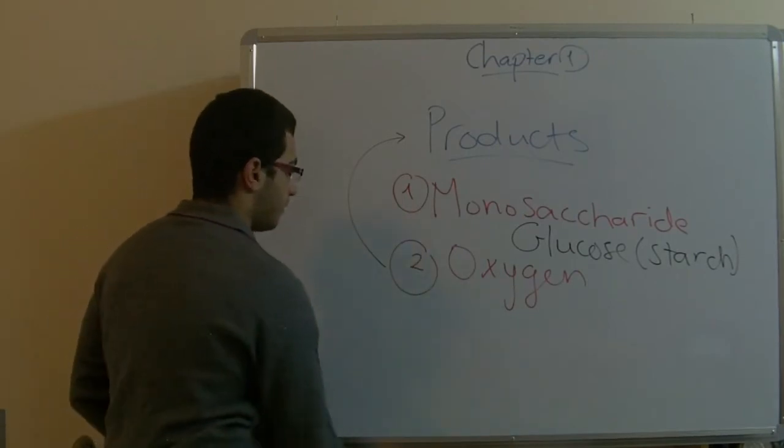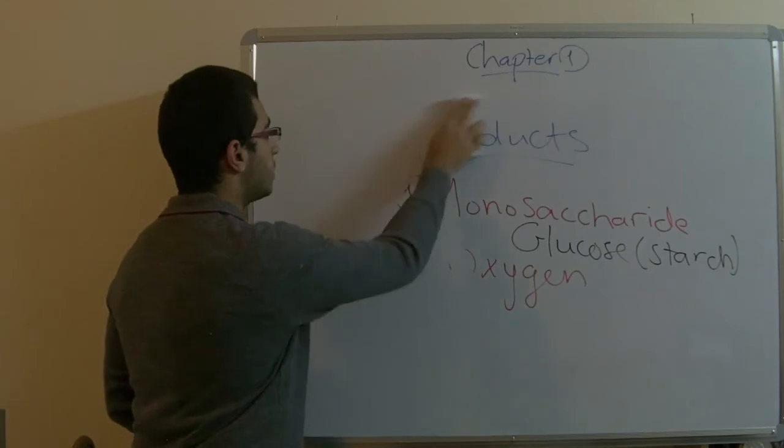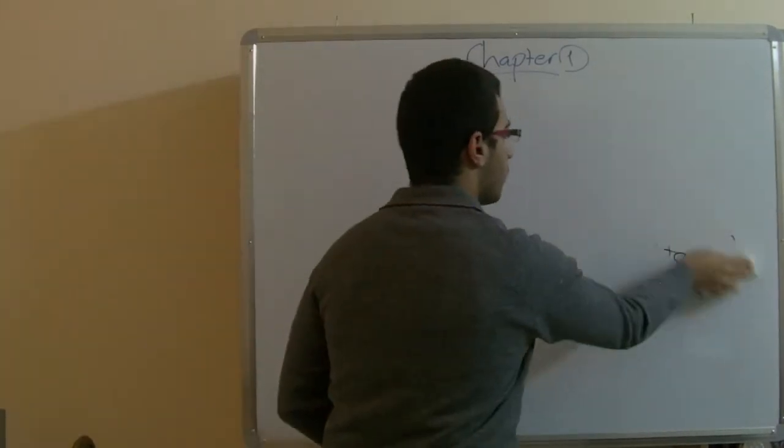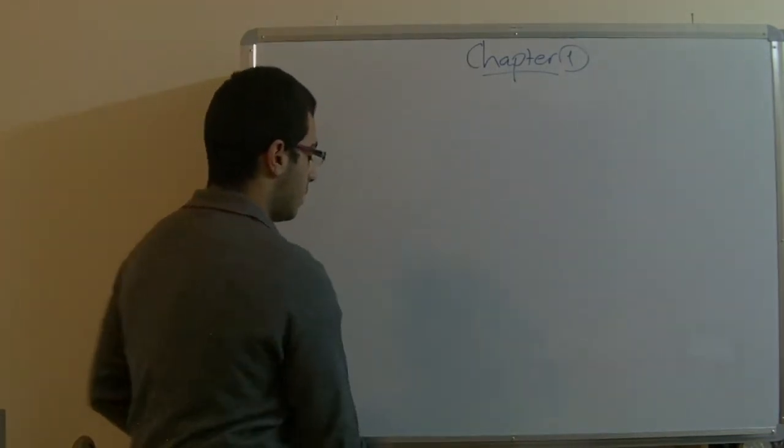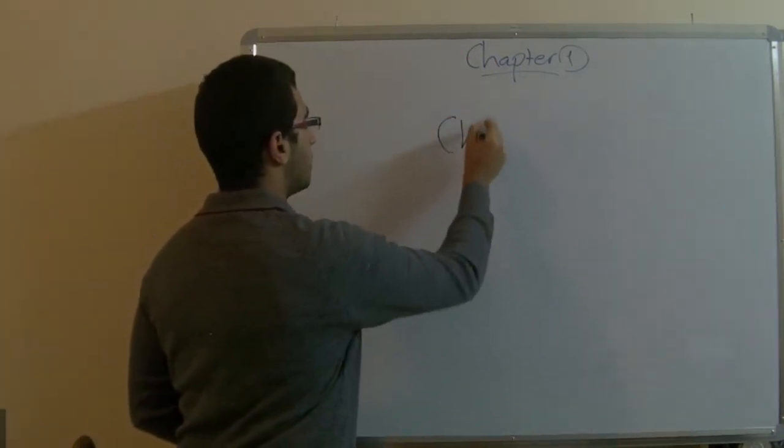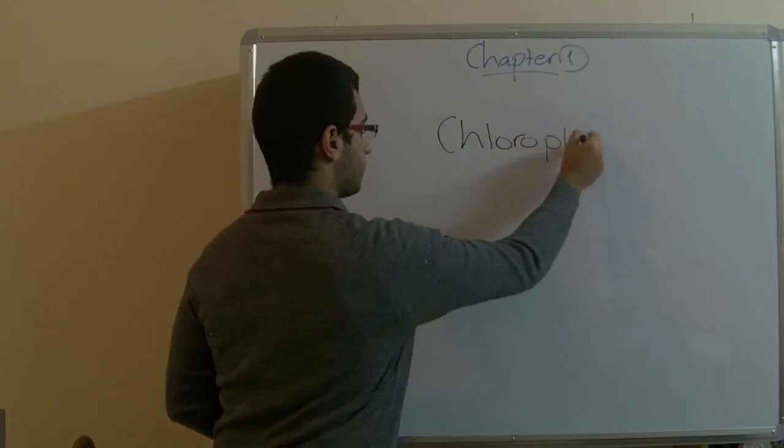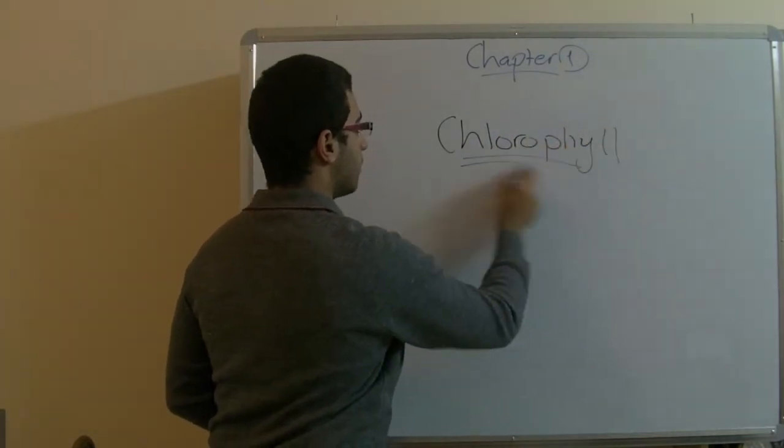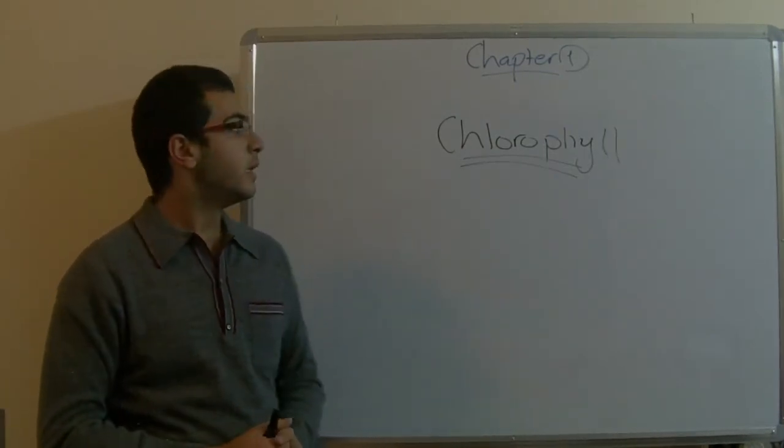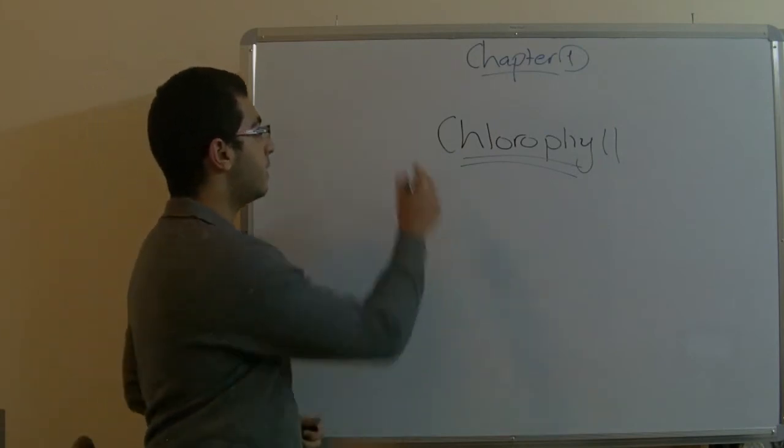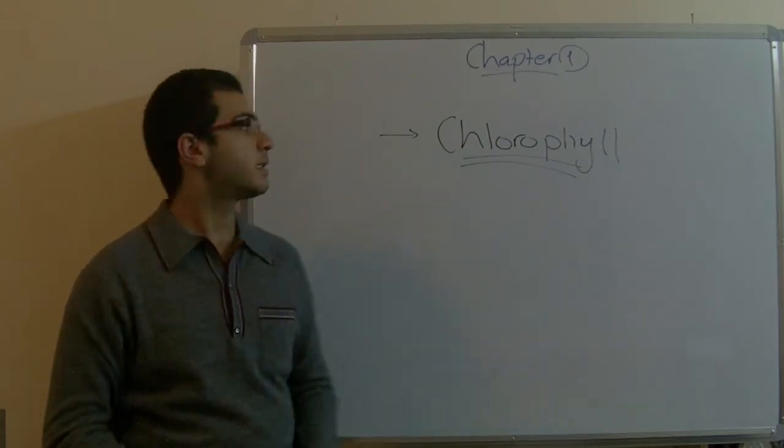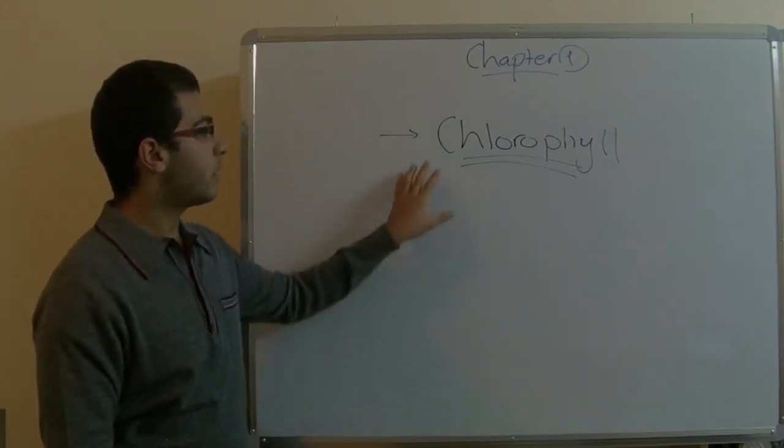The second point we will talk about today is where does photosynthesis take place. Of course, all of us know that chlorophyll is very important for the plant to carry out the photosynthesis process and that the plant doesn't carry out photosynthesis without the chlorophyll. So the photosynthesis will take place in the sites in the plant where the chlorophyll is abundant.